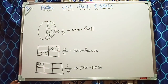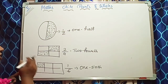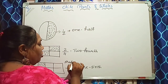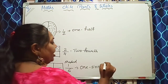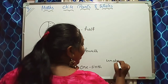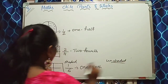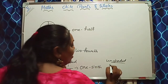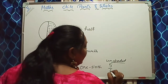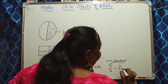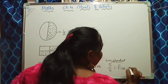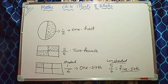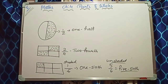Or in this same figure, I want the unshaded part. This is the shaded part. For the unshaded part, if I write the fraction — the unshaded parts are one, two, three, four, five. So five upon six, that means five sixth.